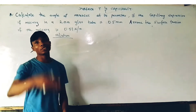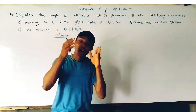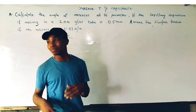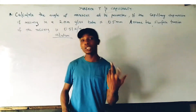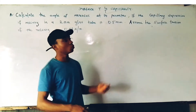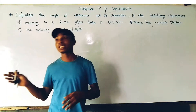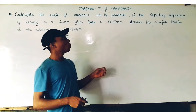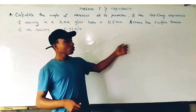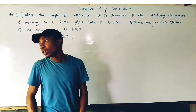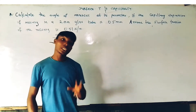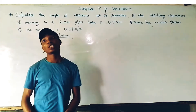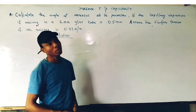Capillarity is basically the rise or fall of a liquid in a capillary tube. In surface tension and capillarity, we are basically talking about two kinds of liquids: water and mercury.